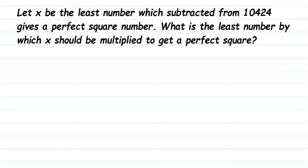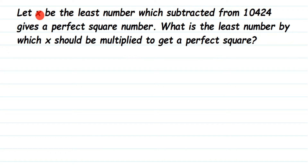Here is a question from square and square root, asked by Vishnu. The question is: let x be the least number which, when subtracted from 10,424, gives a perfect square number. What is the least number by which x should be multiplied to get a perfect square? So they are asking us to find out two things in this question.